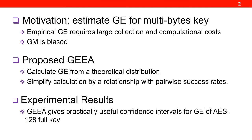This talk contains three parts. First, we talk about the motivation. We review the definition of GE and explain why it is an important metric for side-channel evaluation. Next, we will talk about the state-of-the-art estimators of GE, which are the empirical GE and the GM. For estimating the full-key GE, the empirical GE is too uncertain, and the GM is biased.